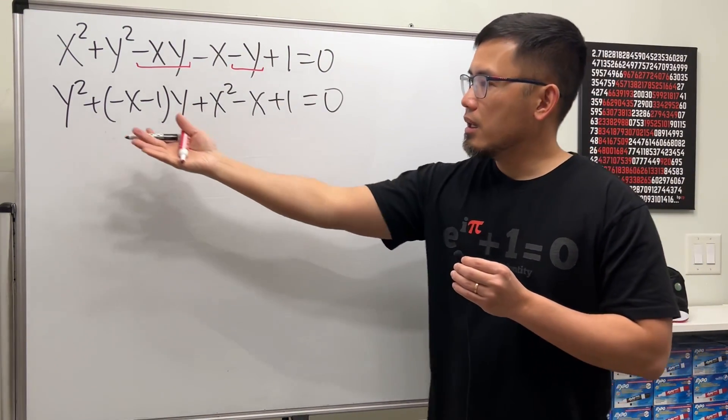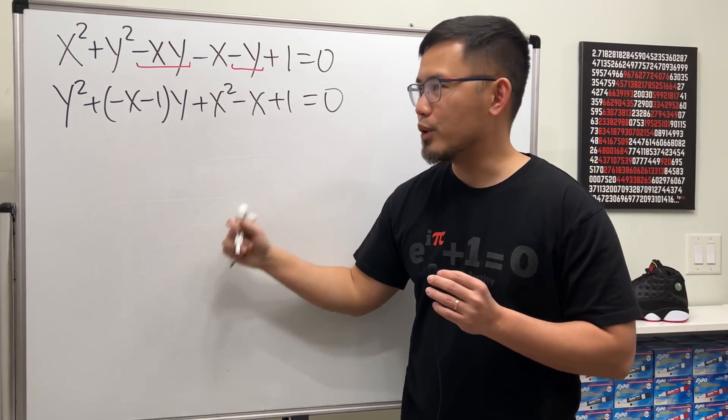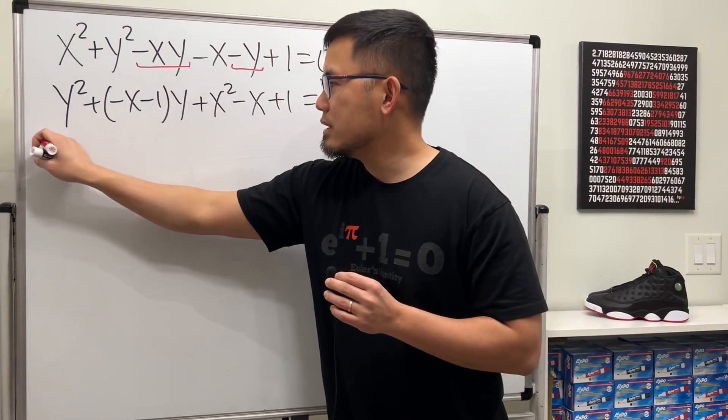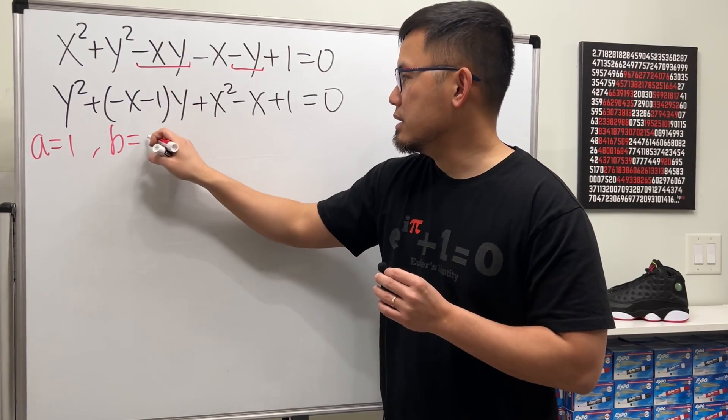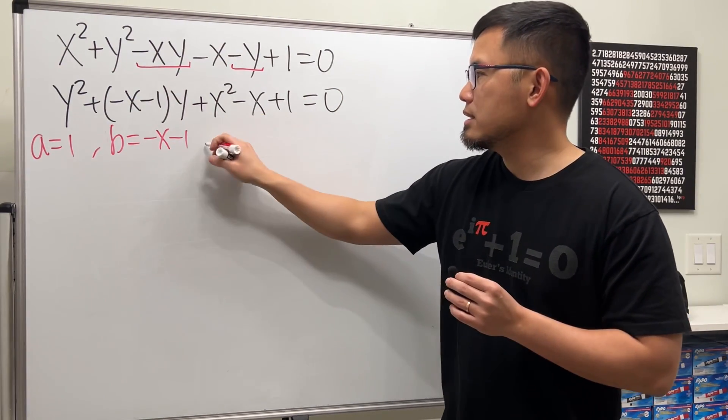As you can see we have a quadratic equation in terms of y and we see that a is just equal to one, b is equal to negative x minus one, and c is just equal to all that: x squared minus x plus one.